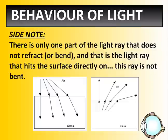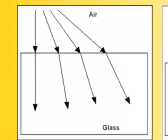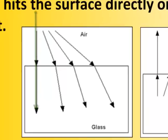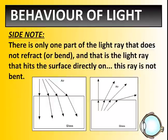There's only one point where light doesn't refract at all, and that is when the light ray strikes the surface of a different medium directly on. So if you look at this example — whether light is traveling from air to glass or from glass to air — if it's directly on, straight down or straight up, it doesn't refract. It's just one of those angles that doesn't cause any refraction at all.